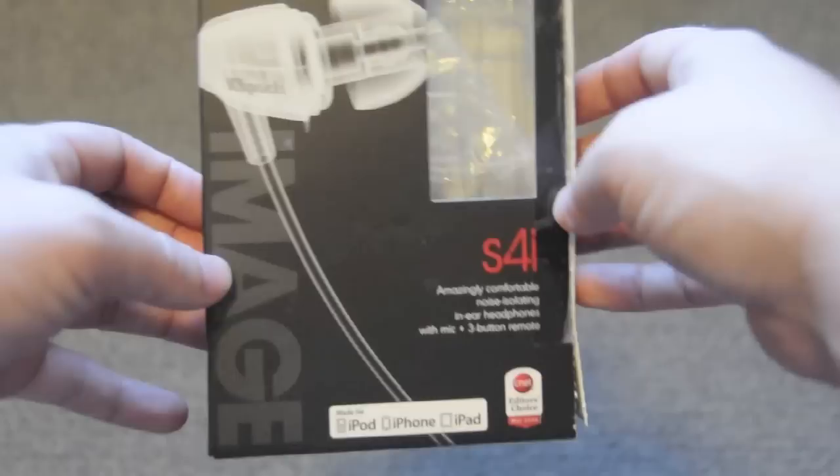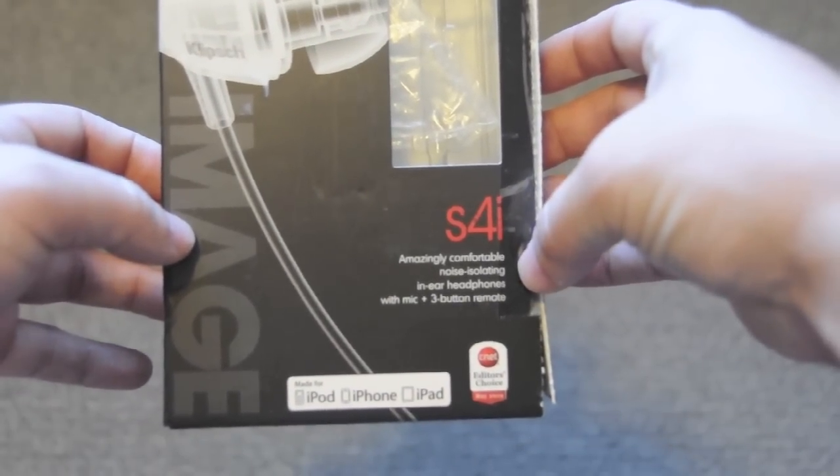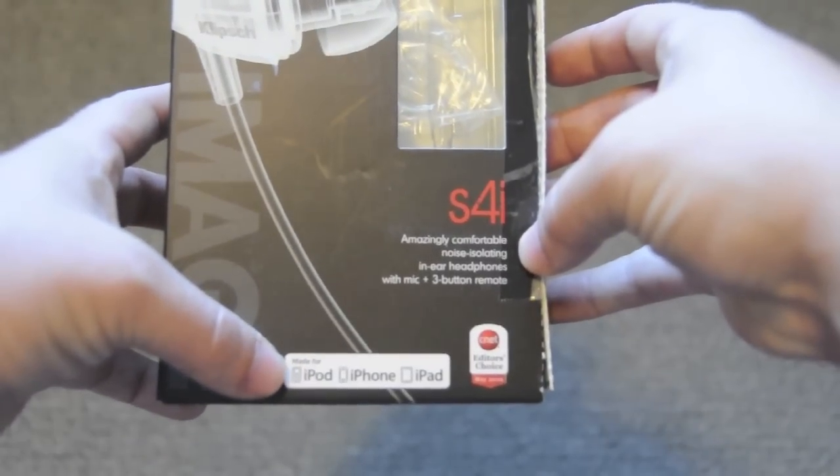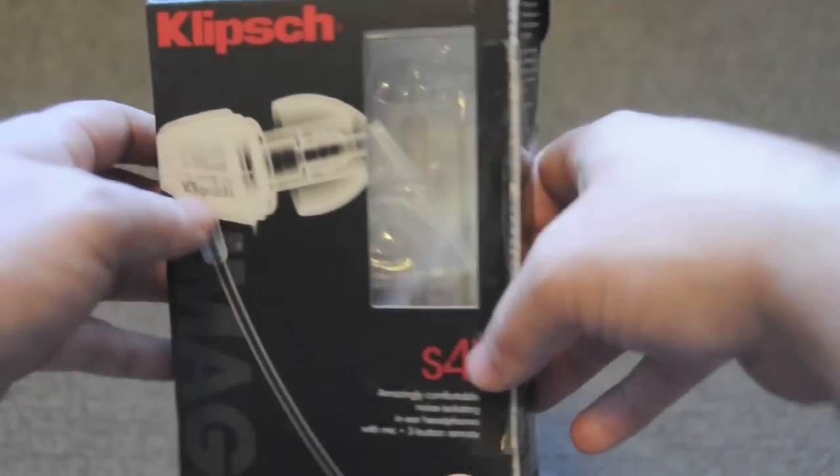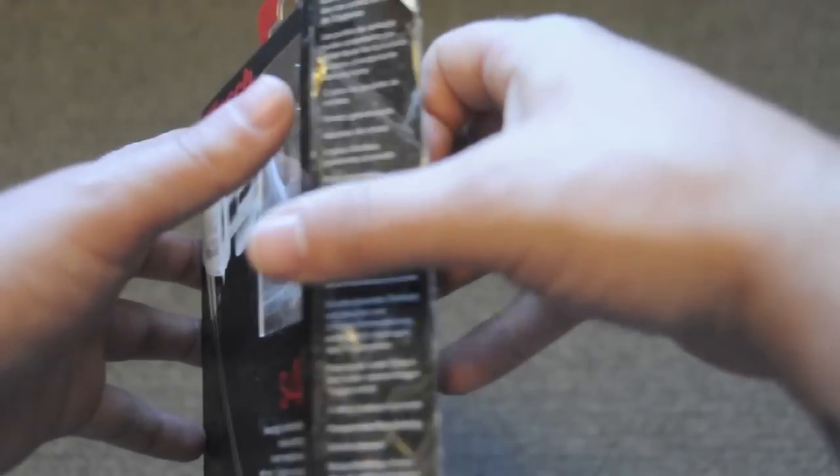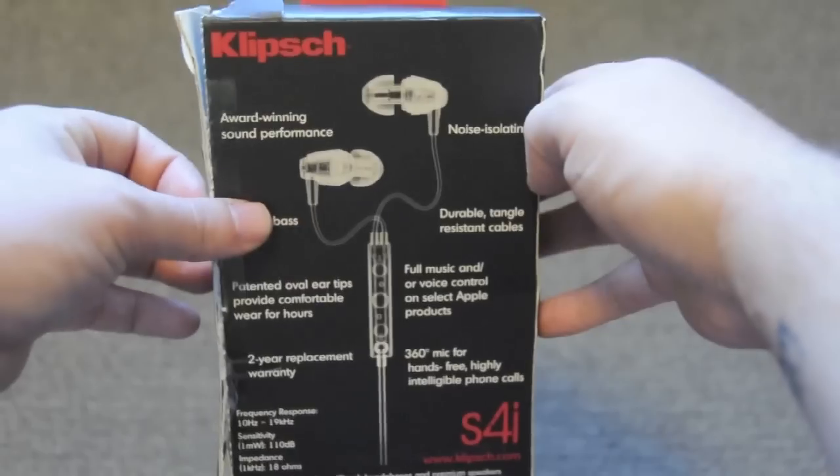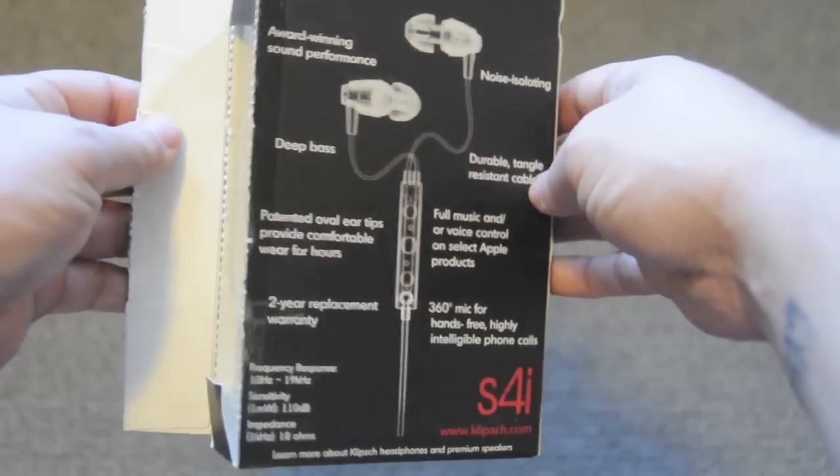So, these are the Klipsch Image S4i. Amazingly comfortable, noise-isolating in-ear headphones with a mic and three-button remote. So they work with iPod, iPhone, and iPad. They won an award from CNET Editor's Choice Award. I did buy these already open, which is probably why they were pretty cheap, but whatever. There are some specifications on the side, if you care. And then, just on the back, just a little information on them.